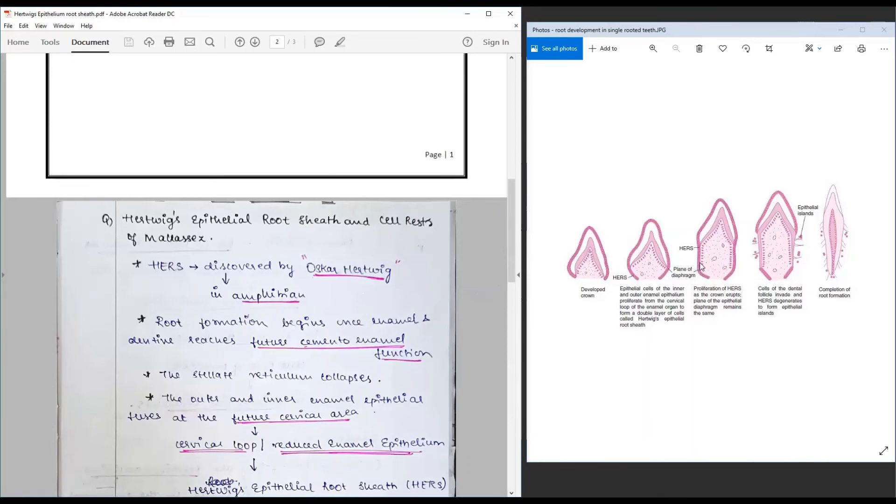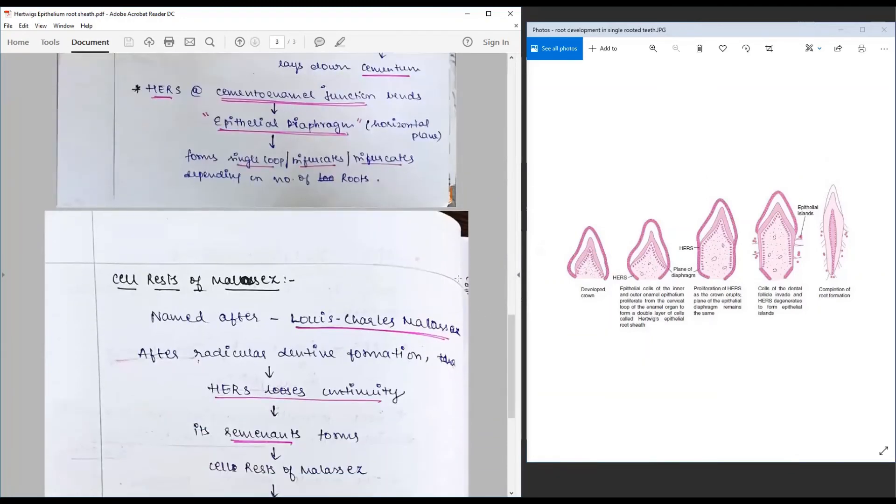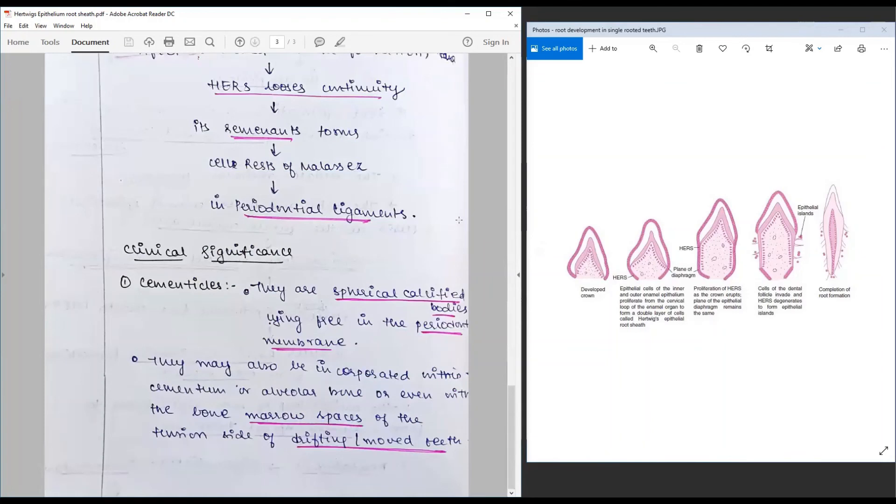How it integrates or plays a role in the formation of multi-rooted tooth and how it persists in adulthood as cell rests of Malassez, how it could contribute to pathologies and cementocles.